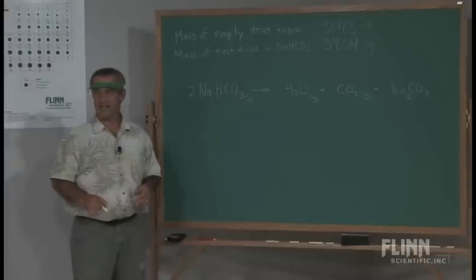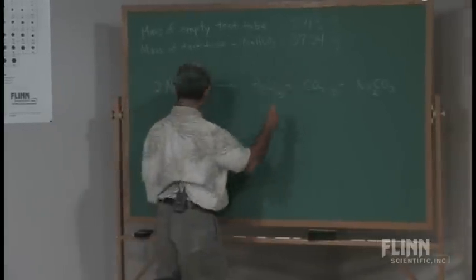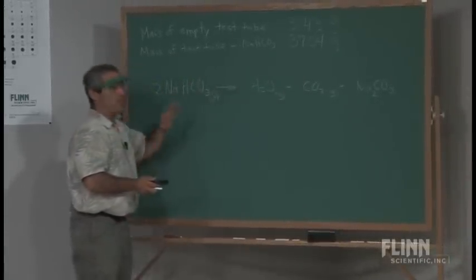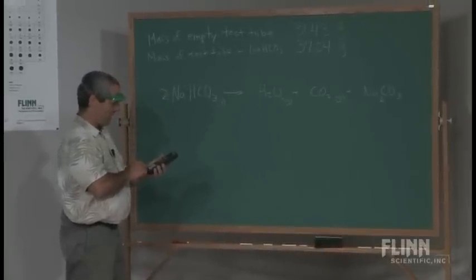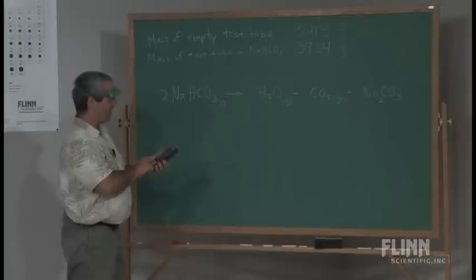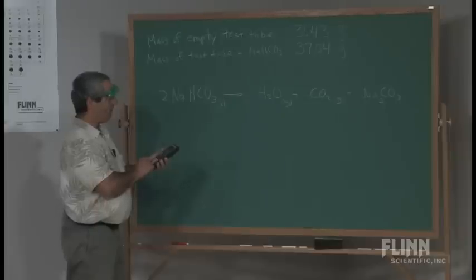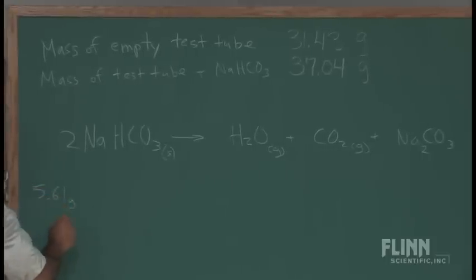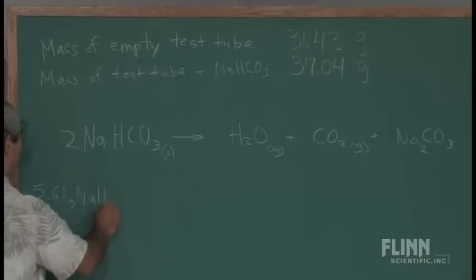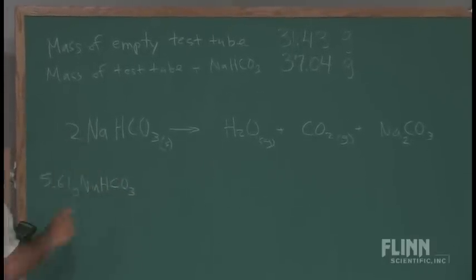So now comes the stoichiometry. And let's see, we're going to subtract these two here to figure out how much. And again, this is all open-ended in terms of not leading through it. They've got to figure this out for themselves. We got 37.04 was the test tube and the sodium bicarbonate, minus 31.43. We got 5.61 grams of NaHCO3 in the test tube to begin with.